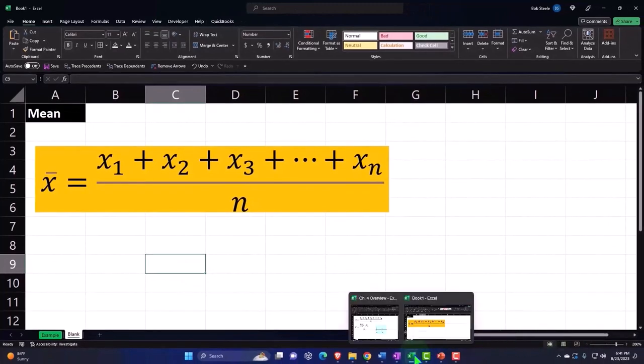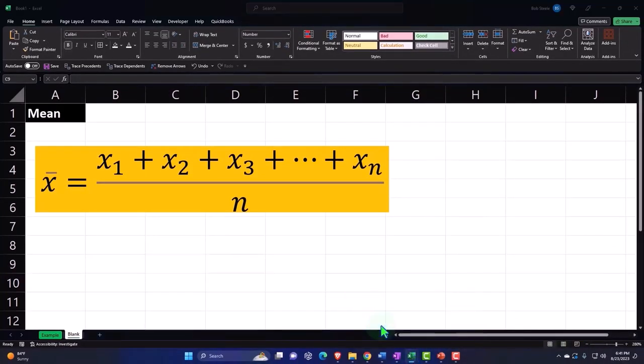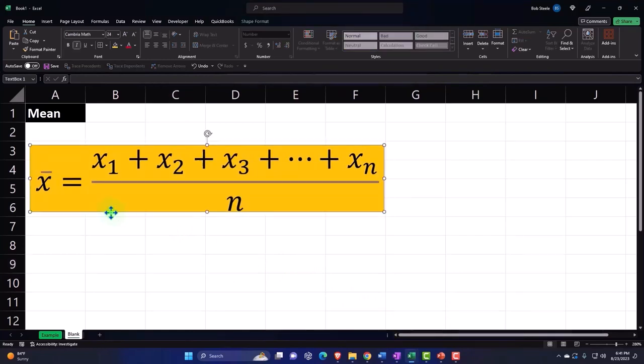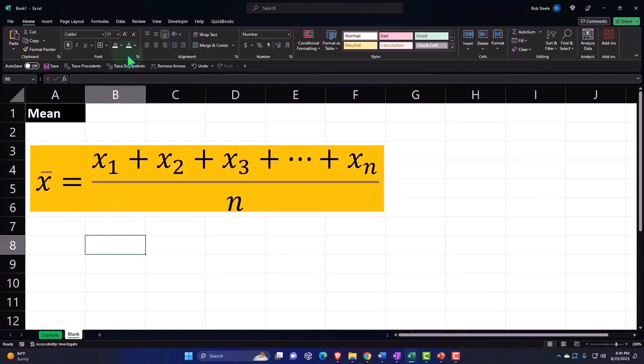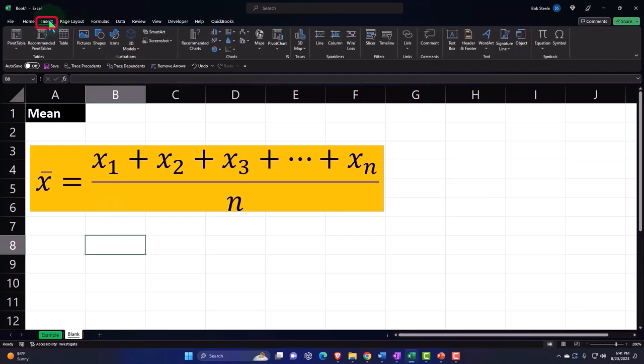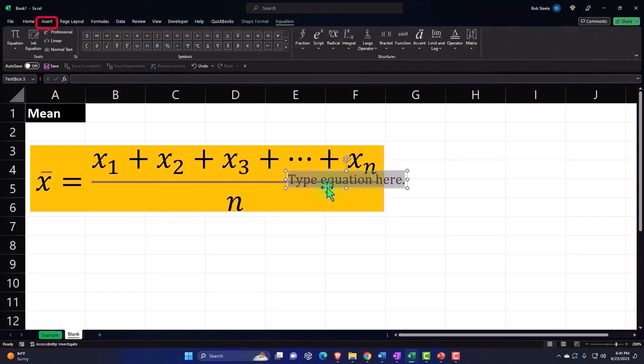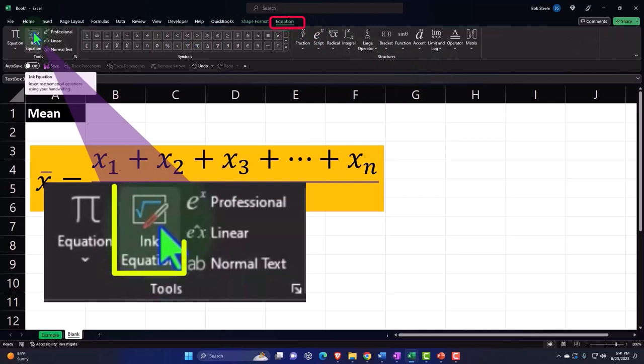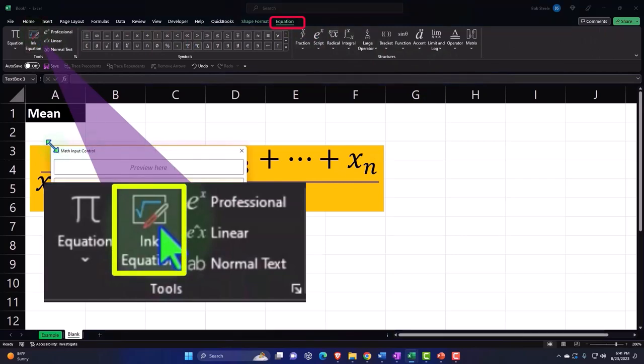So let's do another one. I'll do another formula. This is another way that we can express the mean, and we'll talk about other formulas in the future. So we'll practice this as well in the future. But let's insert another equation. And so here's my equation thing. I'm going to go into it. Now I have the equation up top. I'm going to make an ink equation again and just type this one in.